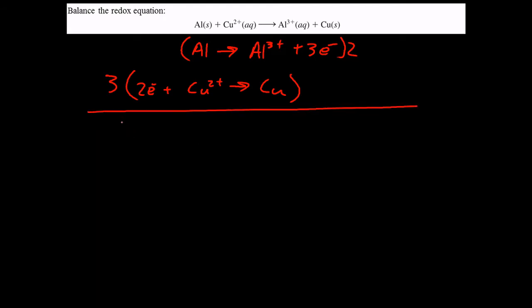So if we do that, what we're going to end up with is six electrons plus three copper two plus, plus two aluminum goes to two aluminum, three plus, plus three coppers, plus six electrons.